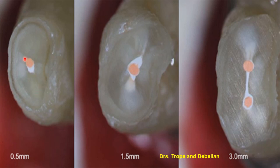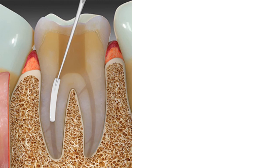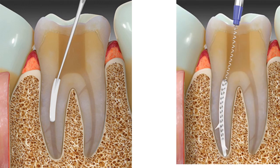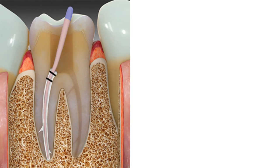When we section the root canal, we can see that gutta-percha accounts for only part of the volume. Remote areas and isthmuses between canals are filled solely by sealer. The technique involves placing sealer in the middle or coronal half of the root canal, agitating it with a lentulo, then placing the single cone. It is imperative to use bioceramic sealers with single cones because of their expansion properties, which decrease the amount of space.